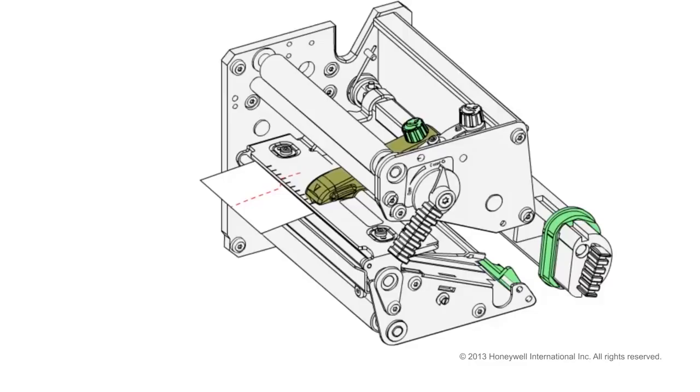When adjusting the pressure arm on PX series printers or the PA30, it is necessary to remove the ribbon take-up core from the take-up hub to gain access to the locking knob.